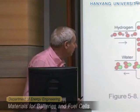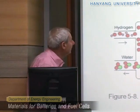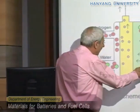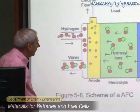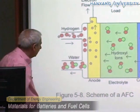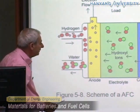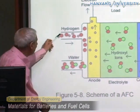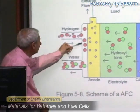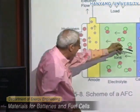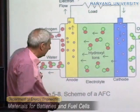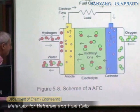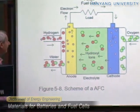Let me briefly show the scheme. This is the alkaline fuel cell. Here you have an electrolyte formed by OH⁻ ions. The situation is similar to what we discussed before: hydrogen comes in, is oxidized, electrons go through the external circuit, and here we have reduction of oxygen with formation of water. The conduction is due to hydroxyl ions.